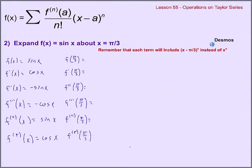We'll see the pattern here — we're switching off sine of pi over 3, cosine of pi over 3, sine of pi over 3, cosine of pi over 3. We just need to remember what those are. Sine of pi over 3 is root 3 over 2, and cosine of pi over 3 is 1 half. The next time around they'll be negative, and the next time around they'll be positive again. Notice that the pattern is coming in groups of 2, and we're going to keep that in mind for when we get to our sigma notation later.